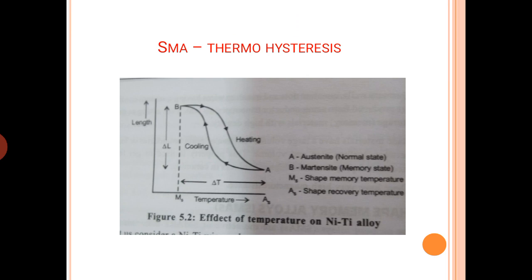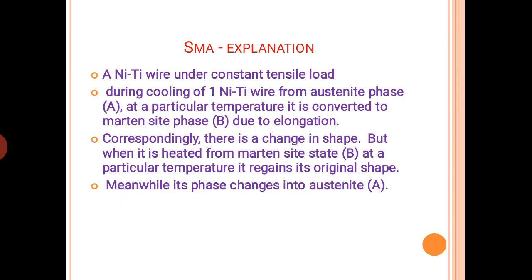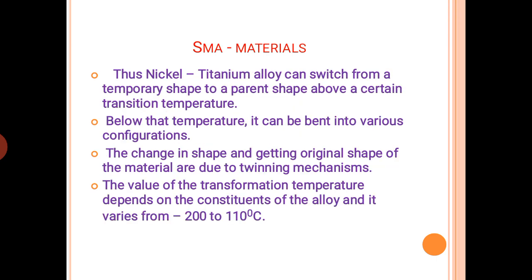In the diagram, A is the austenite phase — the normal high temperature phase — and B is the martensite phase. When you cool it, it goes from A to B, and while heating it regains its original shape. Under a constant tensile load during cooling, the NiTi wire goes from austenite state A to martensite state B, and it elongates. When heated back, it comes back to its original shape.